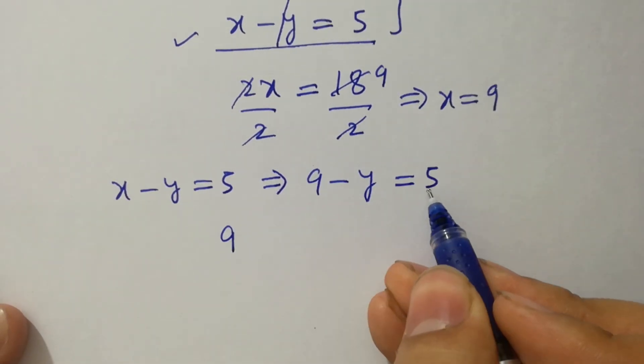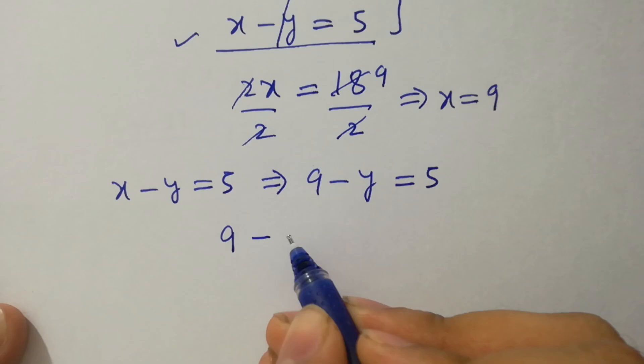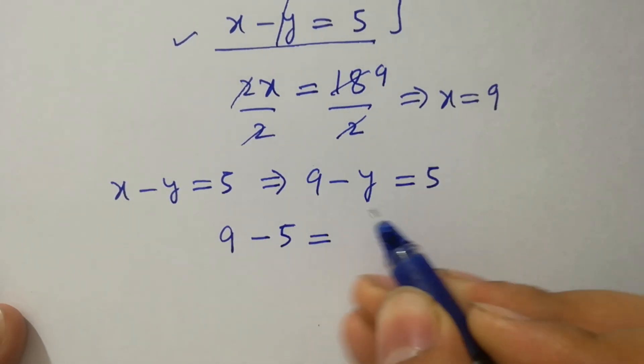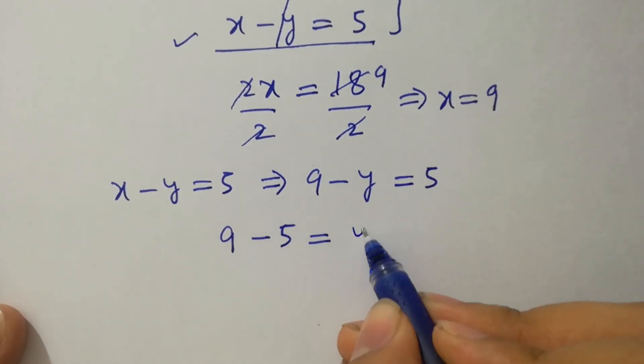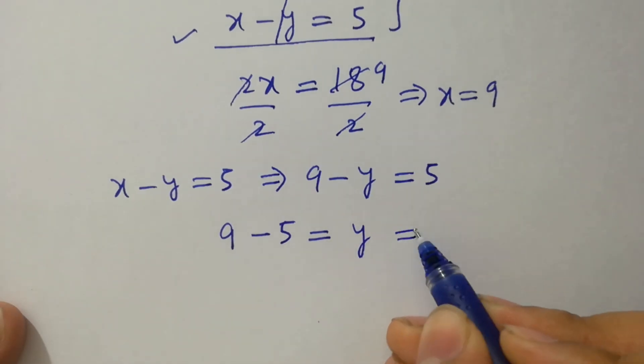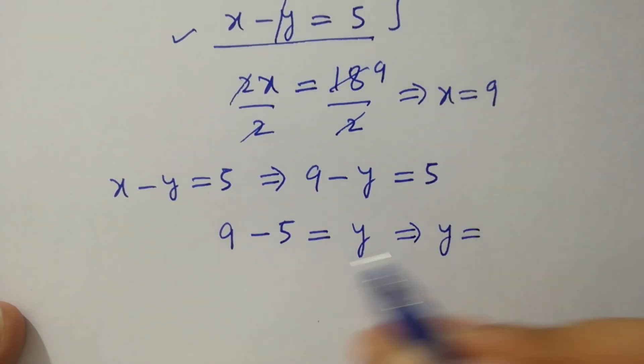9 as it is, plus 5 or left hand side will be minus 5, equal to minus y. Y on right hand side will be here, plus y. So y equal to 9 minus 5 is 4.